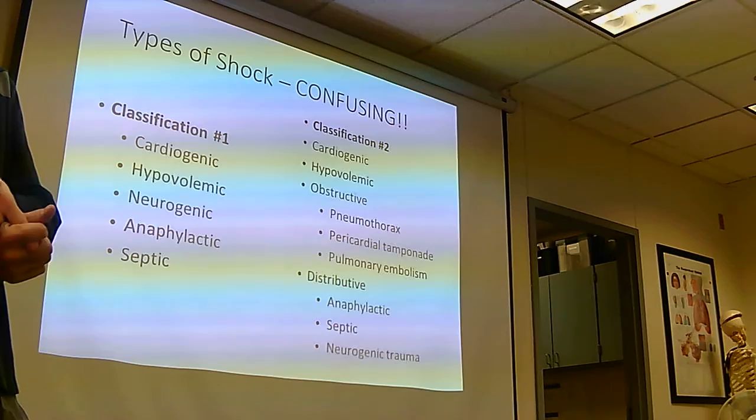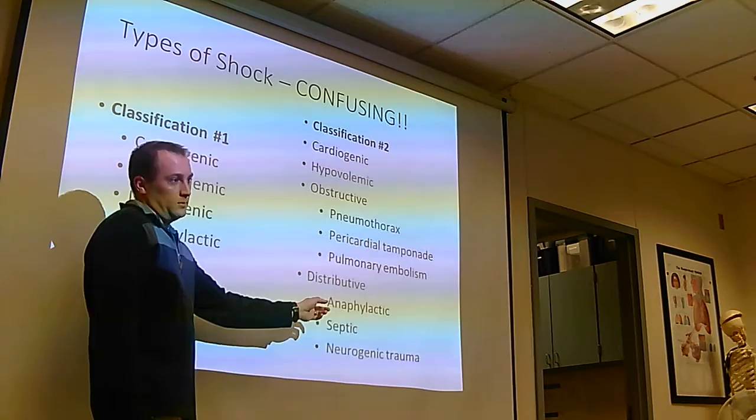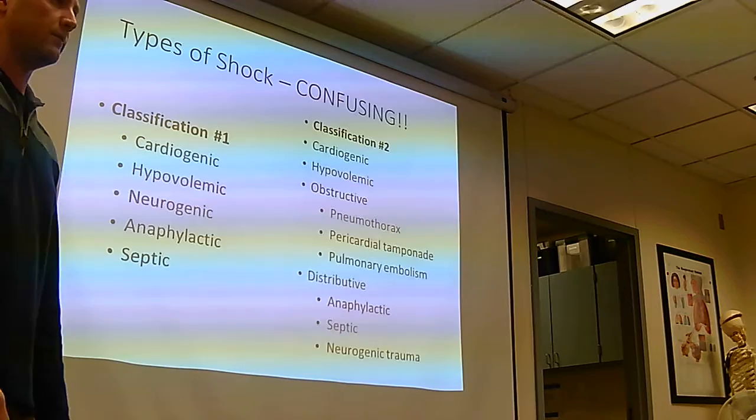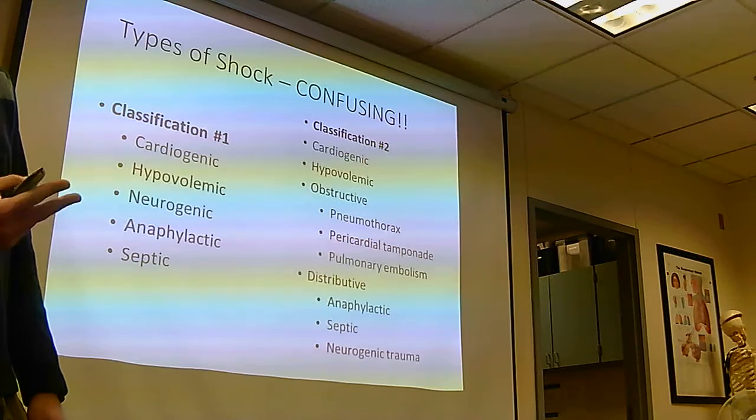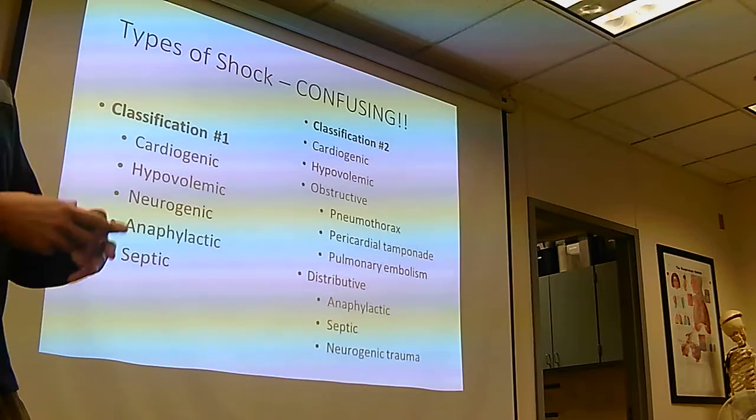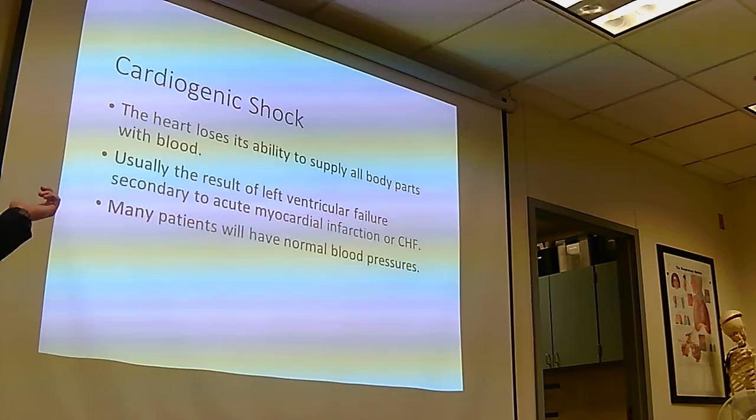Distributive shock just means you're having a hard time distributing blood - that includes sepsis and neurogenic shock. That's because you're not distributing due to problems with the arteries opening up too much. Cardiogenic we already talked about - damage to the pump, you can't pump blood.